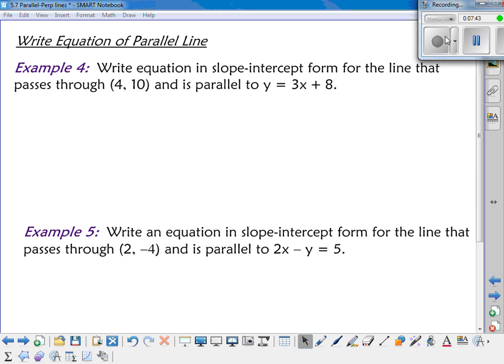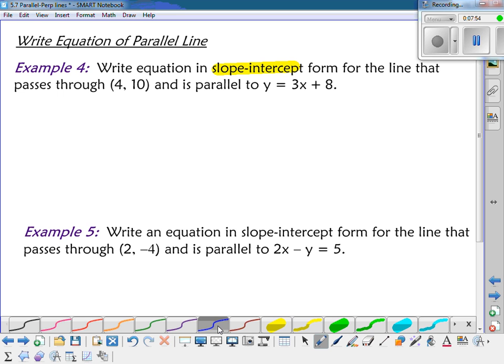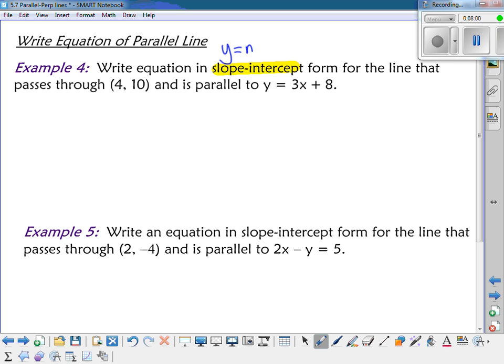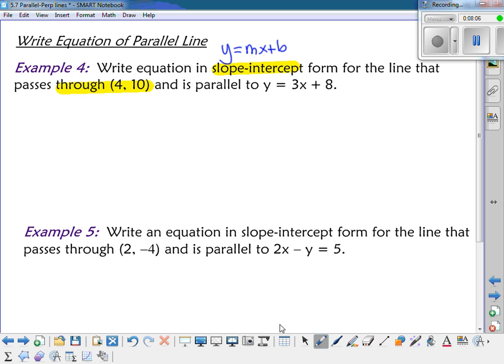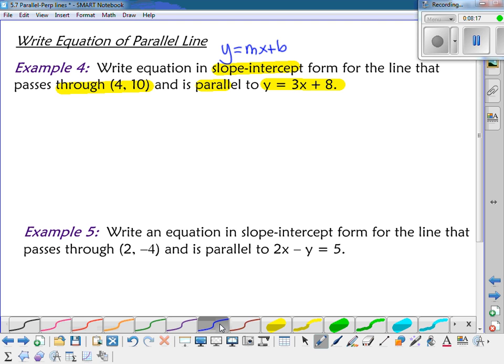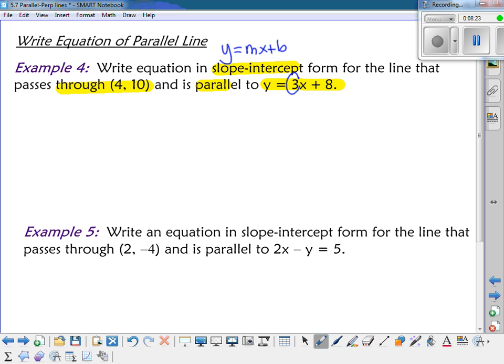Now we're going to write the equation for a parallel line. So example 4, we've got, we're going to write an equation that's in slope-intercept form. So slope-intercept means what? Y equals MX plus B. And we want it to go through the point 4, 10, and it is parallel to Y equals 3X plus 8. So we can use the point slope to get to the slope-intercept. What am I going to use for my slope, though? If I want it to be parallel, what's the slope going to have to be? 3. Same as this one. It's going to have to be 3.